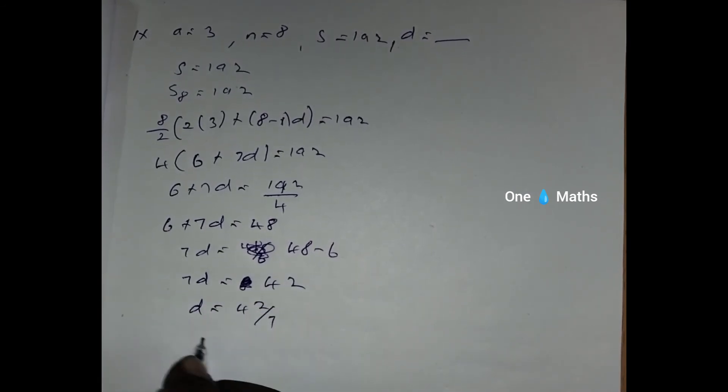Then D equals 42 by 7, D equals 6, the value of D equals 6.